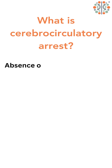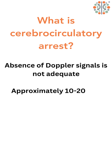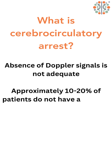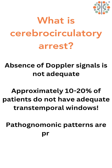How do we define cerebrocirculatory arrest? Absence of doppler signal is not acceptable, since up to 20% of the population does not have an adequate transtemporal window due to relative hyperostosis of the skull. Generally, we rely on one of two pathognomonic patterns to be present.